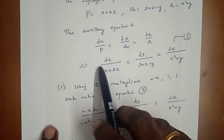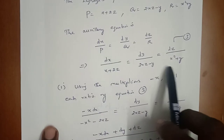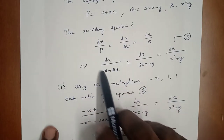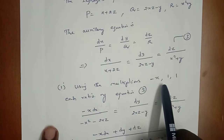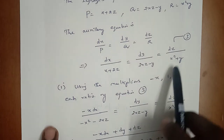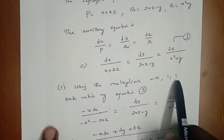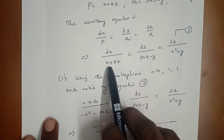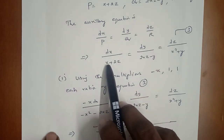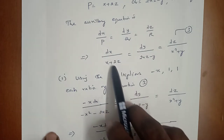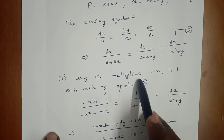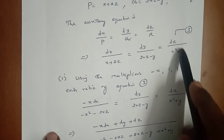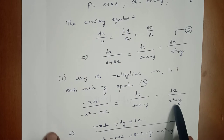Our aim is to make the denominator of the ratio equal to 0. We have to consider some multipliers. The first ratio is multiplied by −x, the second ratio is multiplied by 1, and the third ratio is multiplied by 1. So, first ratio: −x dx, with denominator multiplied by −x giving −x² − 2xz. Second ratio: dy/(2xz − y). Third ratio: dz/(x² + y).